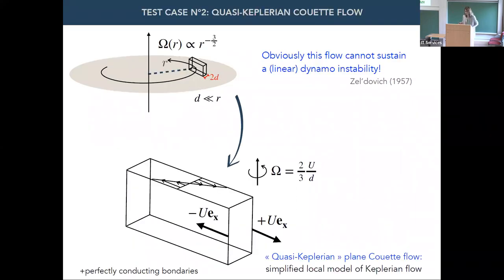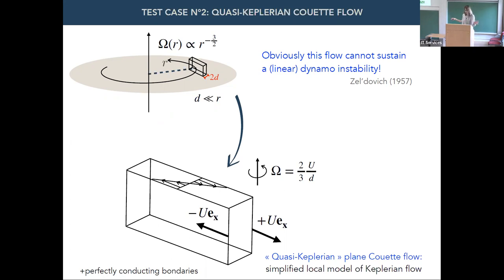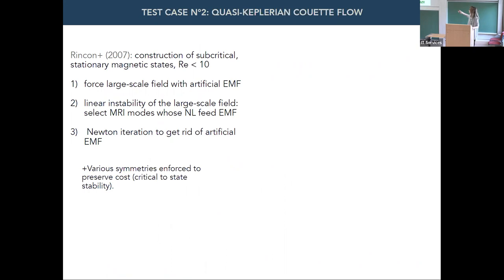The second test case we looked at is Keplerian shear flow — a local model of disk flow. If you look at a small numerical domain far from the spinning axis, where the thickness is small compared to the cylindrical radius, you can use a plane Couette flow to provide a local model of disk flow, provided you choose carefully the ratio between the rotation rate and the shear velocity. We know this flow is not capable of linear dynamo, so any dynamo has to be subcritical. We prescribe perfectly conducting boundaries in the wall-normal direction.